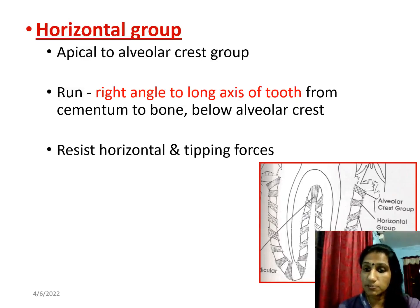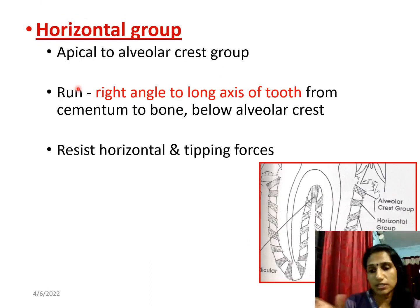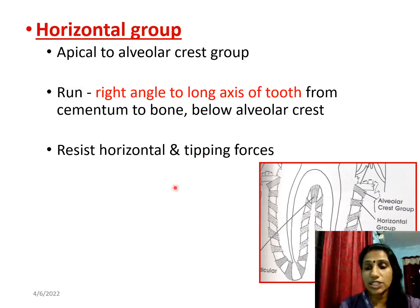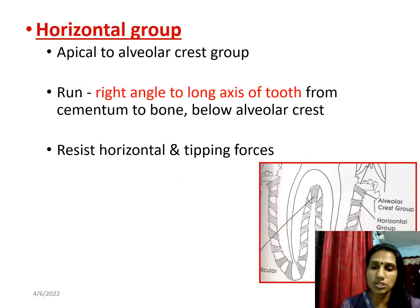The next set is the horizontal group of fibers, seen just below the alveolar crest fibers. They are termed horizontal because of their direction — they run at right angles to the long axis of the tooth, from the cementum to the bone in a horizontal manner. The function of these fibers is to resist horizontal and tipping forces.